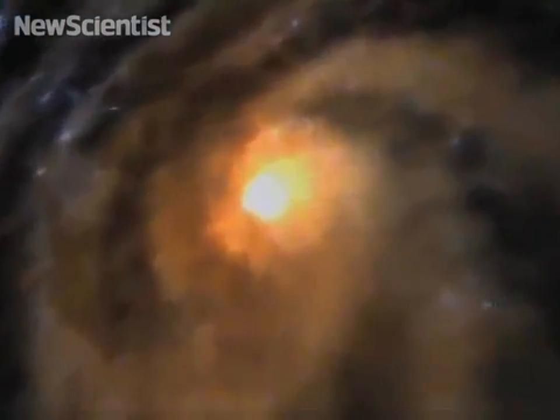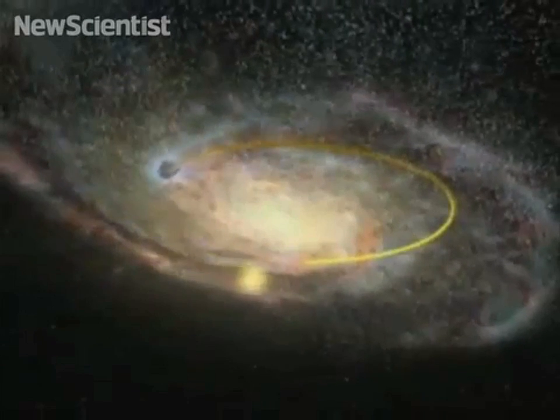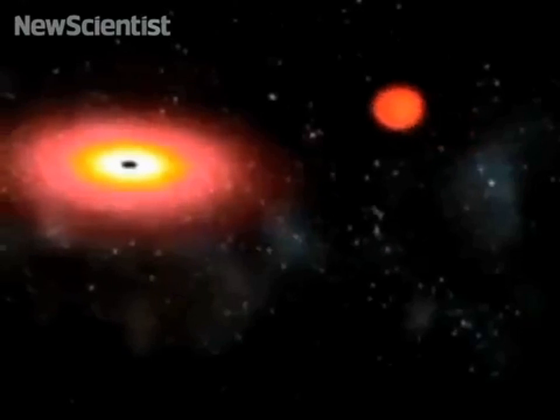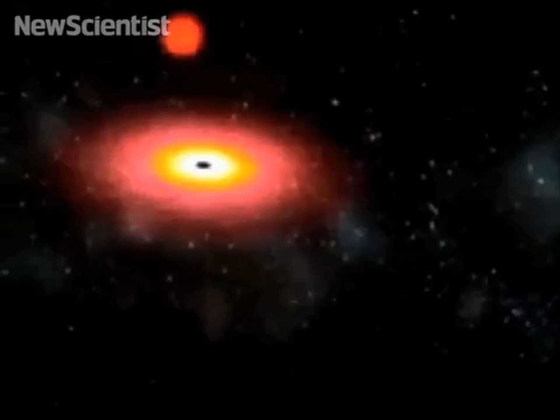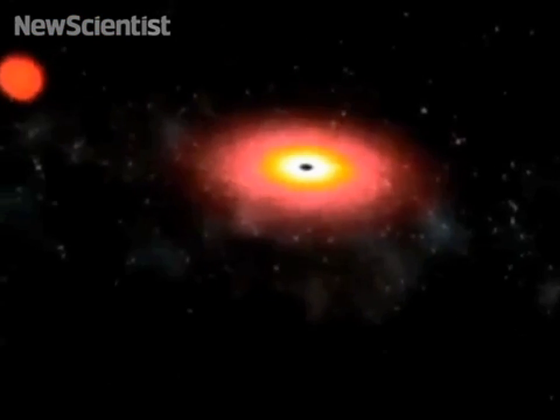Although black holes don't emit light, scientists know they exist by observing their interaction with nearby matter. They do this by measuring visible light, x-rays and radio waves emitted by objects like stars and gas clouds near a black hole.